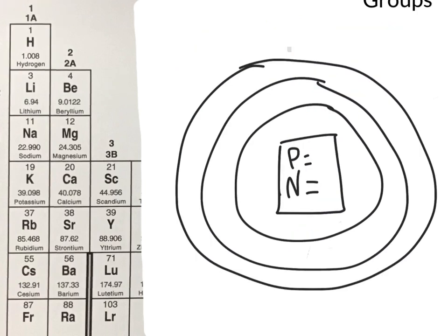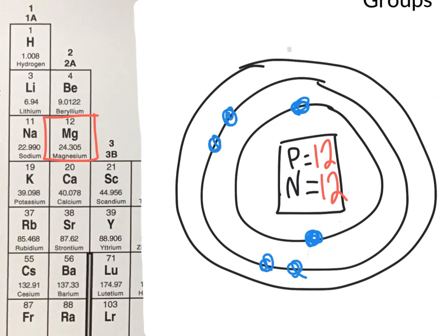Now let's look at atom number 12, magnesium. Magnesium has 12 protons and 12 neutrons. Because it has 12 protons, it should also have 12 electrons. The first ring around magnesium can hold 2 electrons. Once we have these 2 placed, we still need to add an additional 10 electrons. The second ring around magnesium can hold up to 8 electrons.